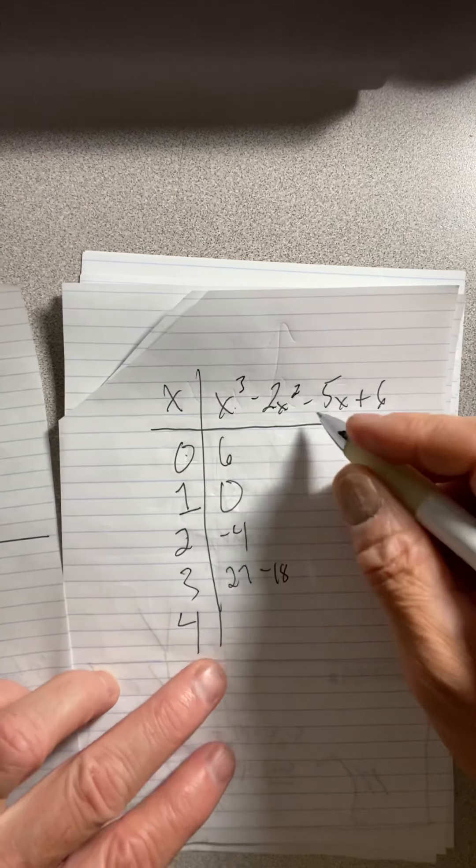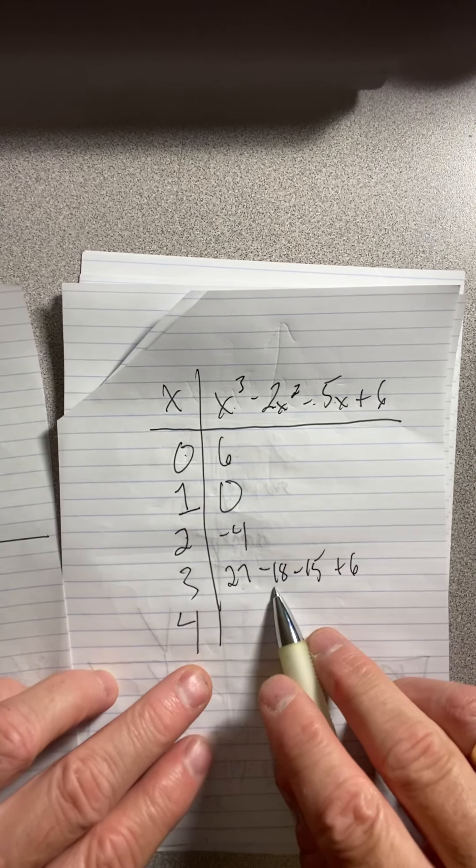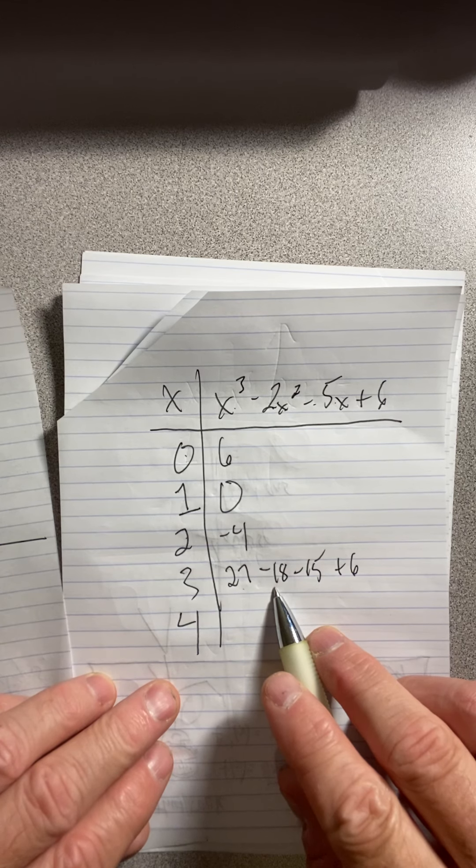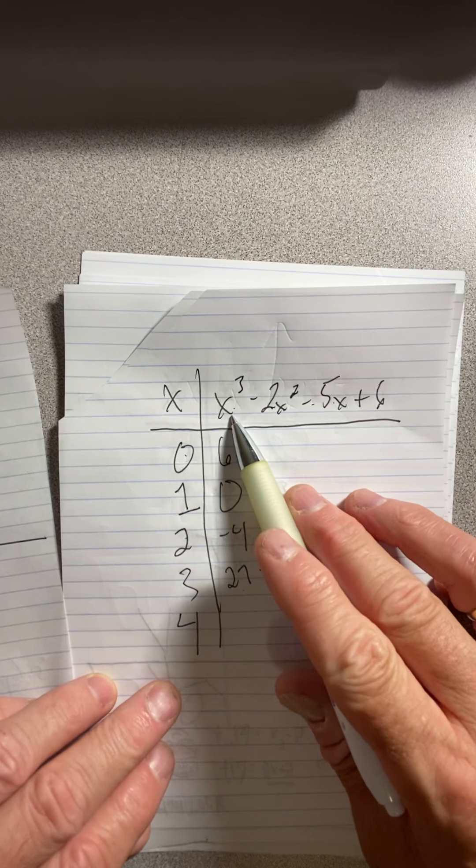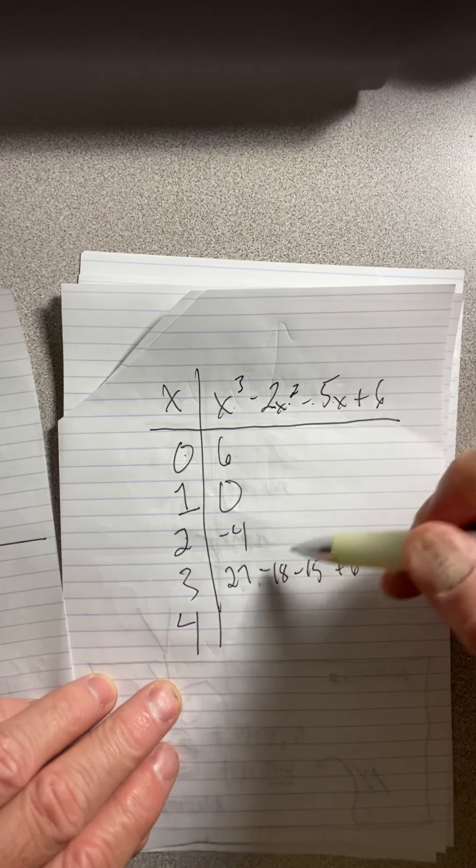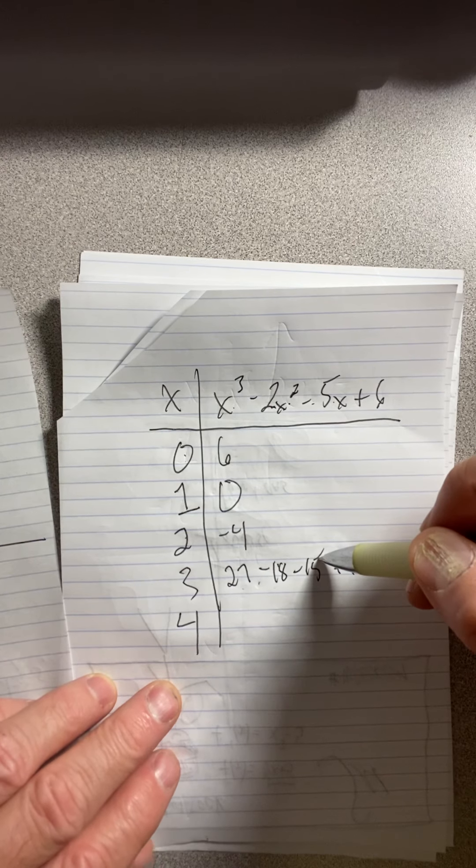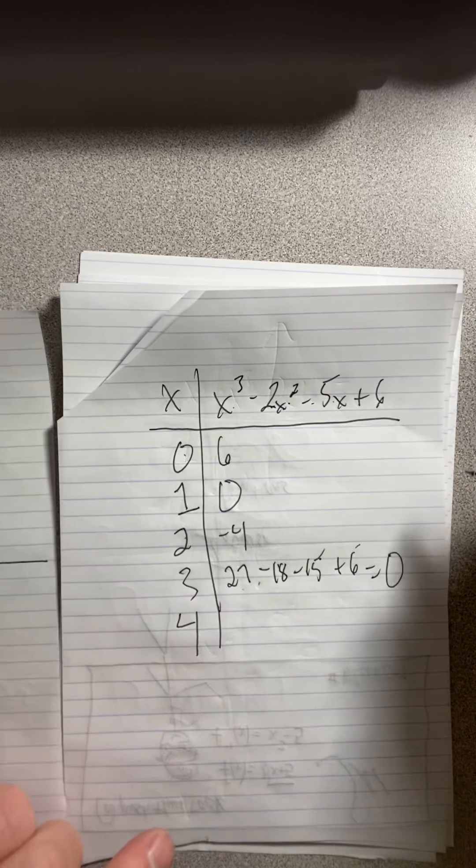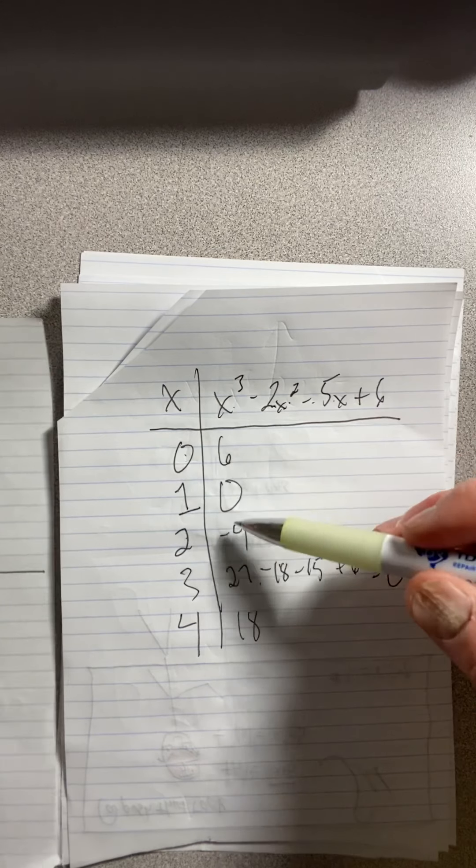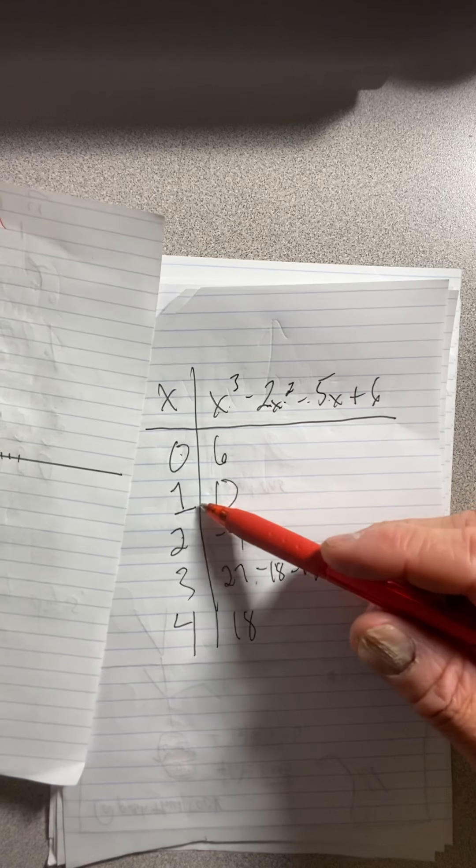Let's try 3. Well, 3 cubed is 27. 3 squared is 9. And if you double it, you get 18. 5 times 3 is 15. And then we have plus 6. So 27 minus 18, that's a negative 9. 3 cubed is 27. 3 squared is 9, times 2 is 18. 9 minus 15 is a negative 6 plus 6. That's 0. So now we already did 4. It was 18. So we found zeros in between those where we thought they might be.